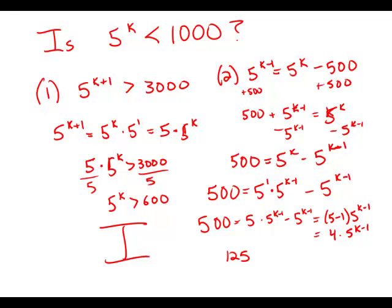Divide by 4, we get 125 equals 5 to the k minus 1. Well, 125, that's 5 to the third. So k minus 1 equals 3. k equals 4.